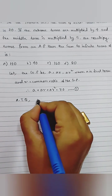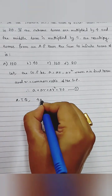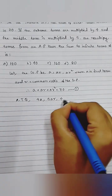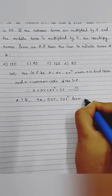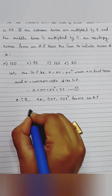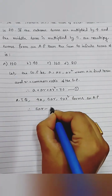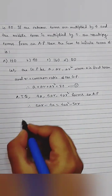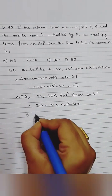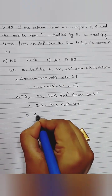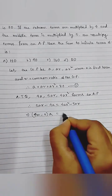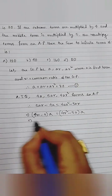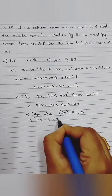According to the question, we can write that 4a, 5ar, and 4ar² form an AP. Therefore, 5ar minus 4a equals 4ar² minus 5ar. Taking the common factor a out, we can write five r minus four equals four r squared minus five r.